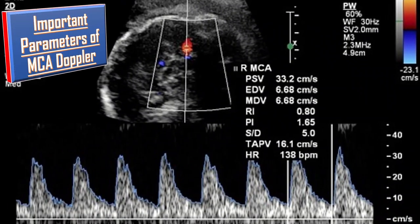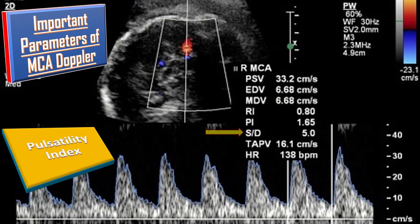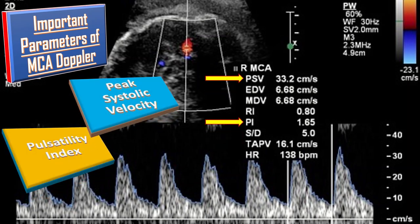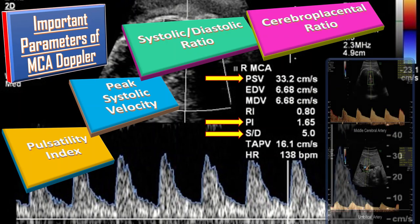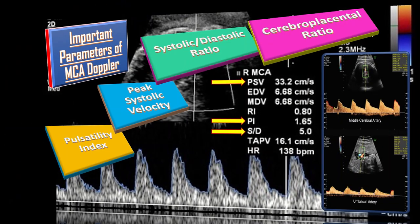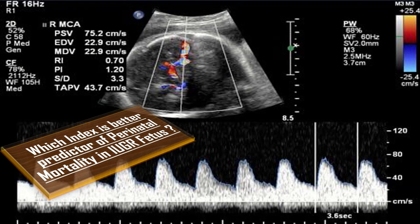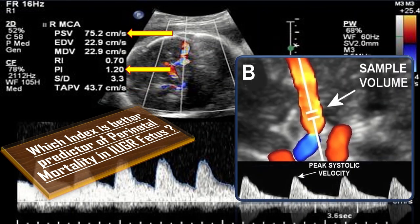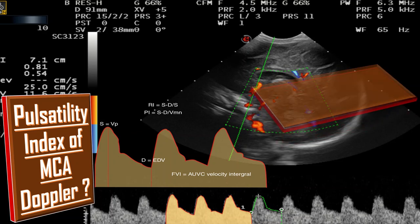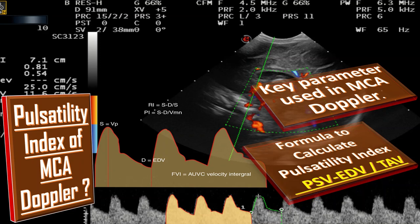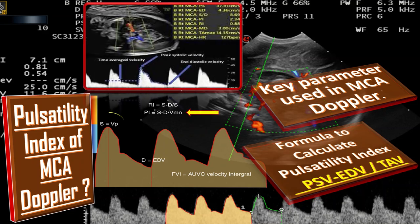What are the important parameters of MCA Doppler? The important parameters include: fetal MCA pulsatility index, fetal MCA peak systolic velocity (the highest velocity that should be recorded), fetal MCA systolic-to-diastolic ratio, and the cerebro-placental ratio of pulsatility index of MCA and umbilical artery. A normal fetal MCA S/D ratio should always be higher than the umbilical artery S/D ratio. MCA peak systolic velocity is a better predictor of perinatal mortality in IUGR fetuses than the pulsatility index. The pulsatility index is calculated as PSV minus EDV, divided by TAV (time-averaged velocity).